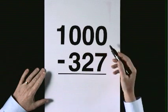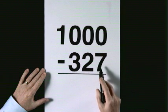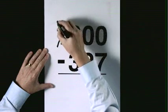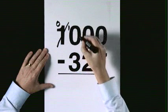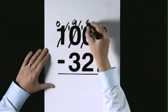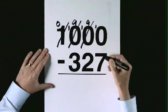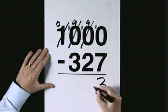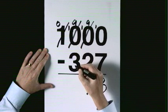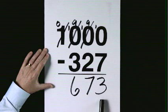1,000 subtract 327. We need to exchange. 0, 10, 9, 10, 9, 10. 10 take 7 is 3. 9 take 2 is 7. 9 take 3 is 6. The answer is 673.